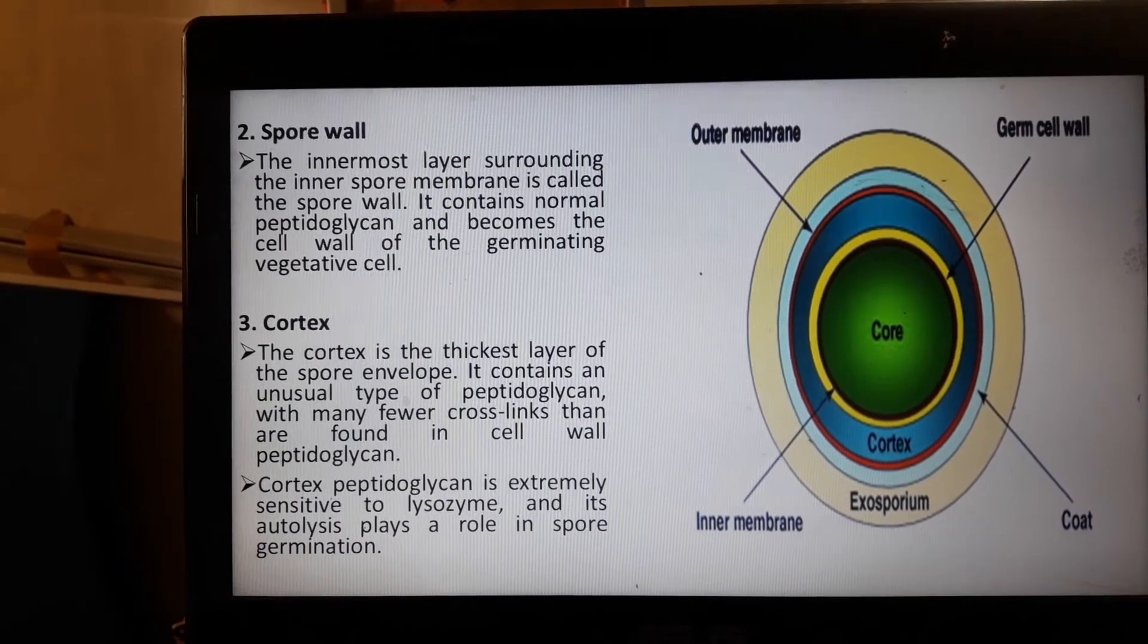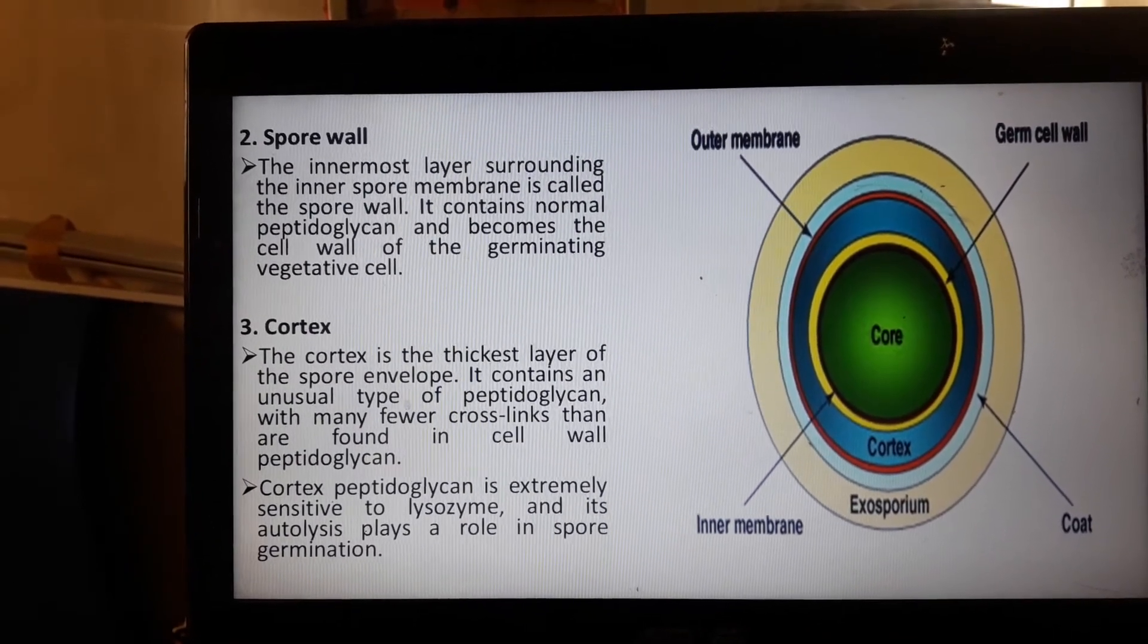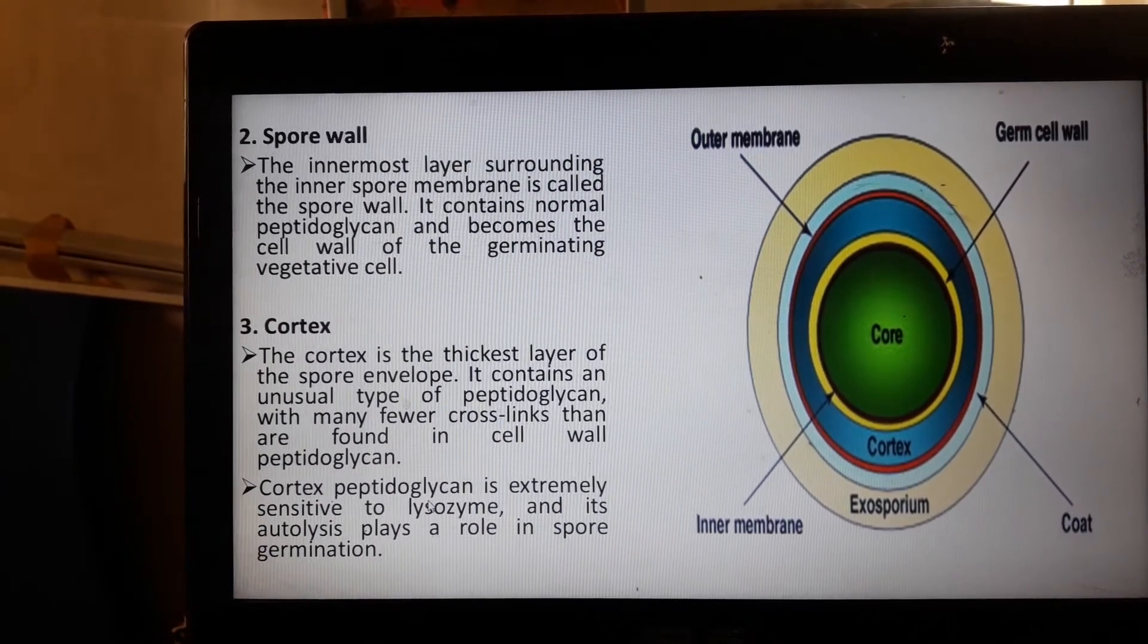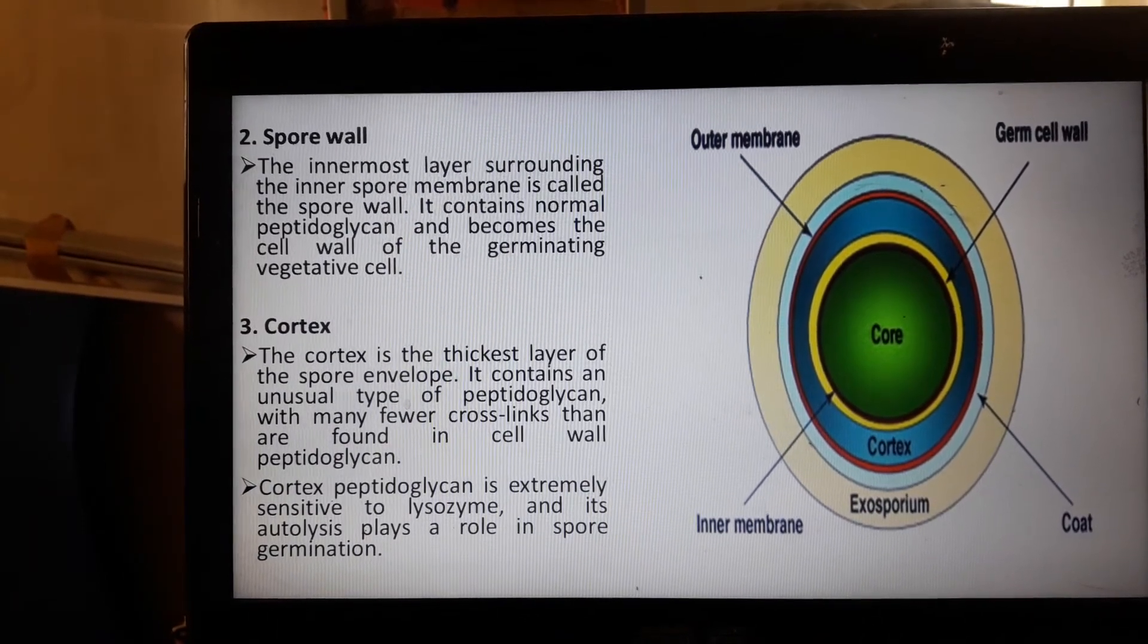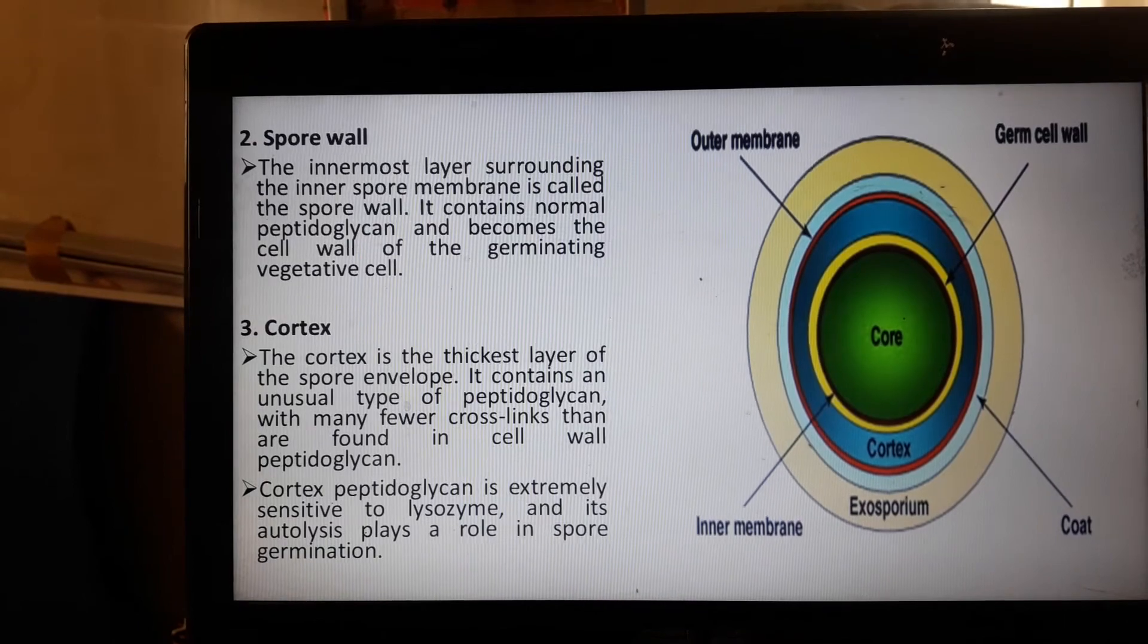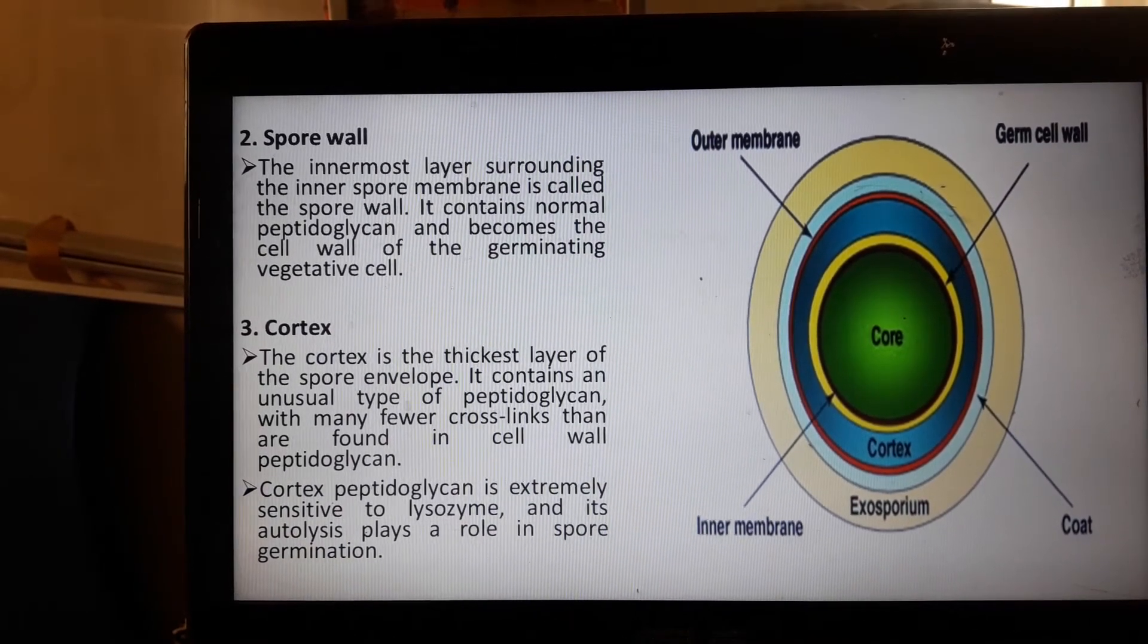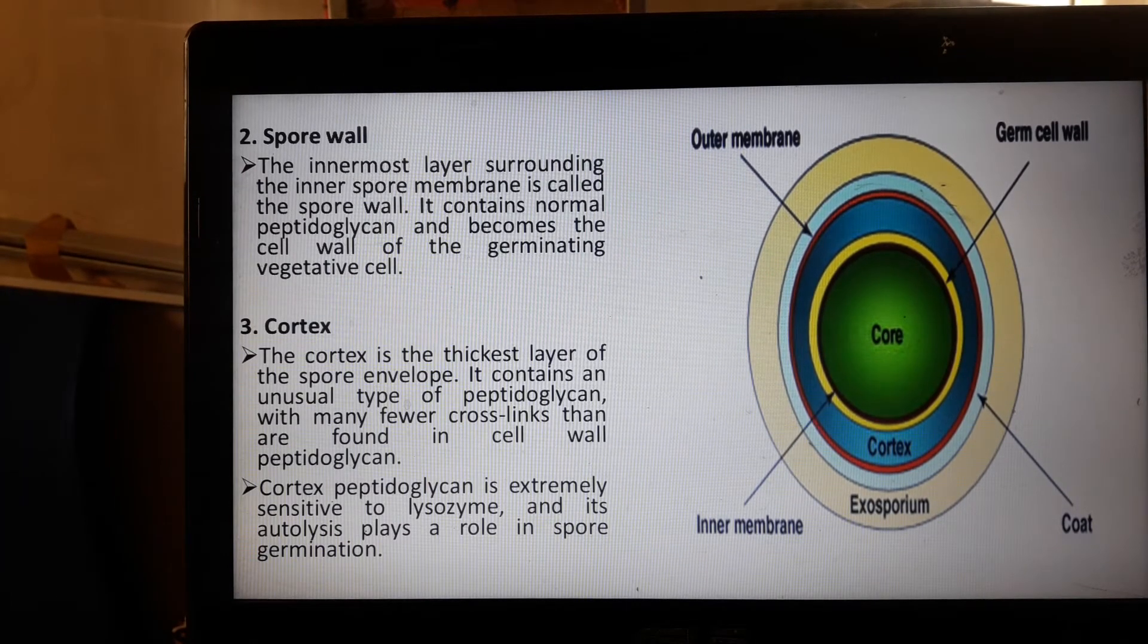They also protect against penetrations of host cells. Cortex peptidoglycan is extremely sensitive to lysozymes, enzymes found in lysosomes. This autolysis plays a role in spore germination—autolysis meaning self-splitting of the cells, especially in the spore germination process.